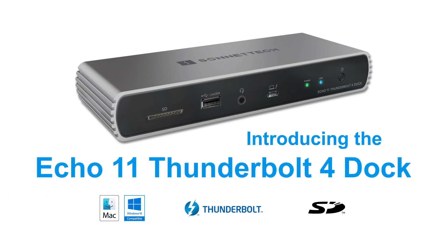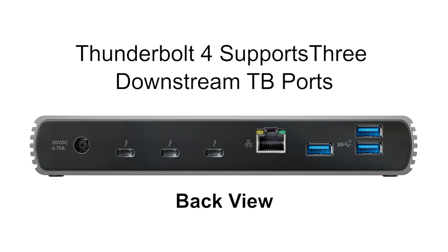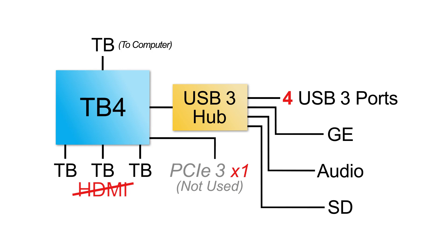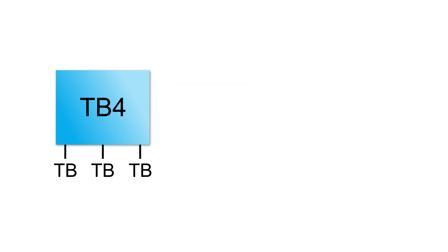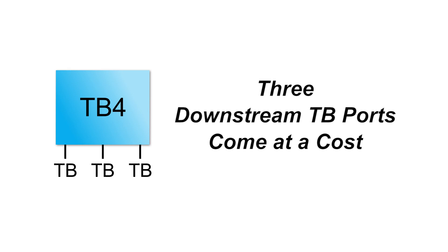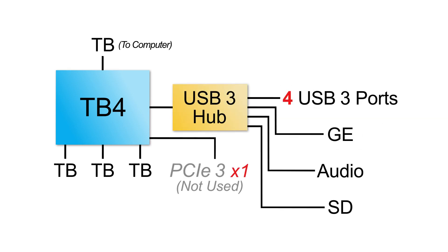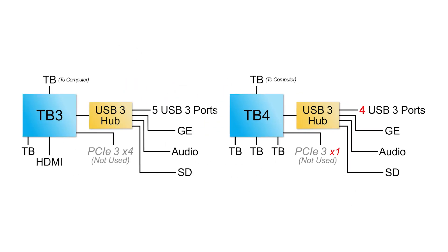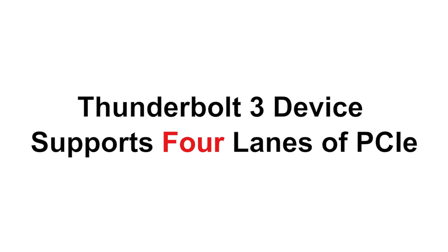The HDMI and Thunderbolt ports are directly connected to the Thunderbolt controller, and PCIe is just not used. How does the new Echo 11 Thunderbolt 4 dock change this? Thunderbolt 4 is perfect in the dock because it can support three downstream Thunderbolt ports — the two additional Thunderbolt ports replace one USB 3 port and the HDMI port. Two of the three Thunderbolt ports can also support video. However, a Thunderbolt 4 peripheral controller supports only one lane of PCIe, whereas a Thunderbolt 3 device supports four lanes of PCIe.